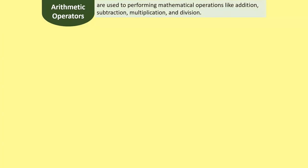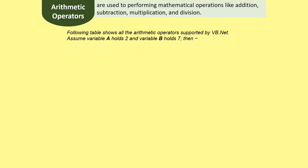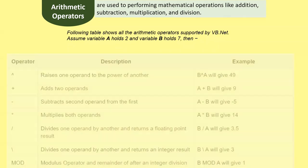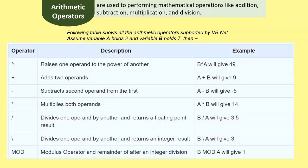Arithmetic operators are used to perform mathematical operations like addition, subtraction, multiplication, and division. The following table shows all arithmetic operators supported by VB.NET, with columns for the operator, description, and examples. We assume variable A holds 2 and variable B holds 7. The first operator is exponentiation — it raises one operand to the power of another. For example, B to the power of A gives 49.